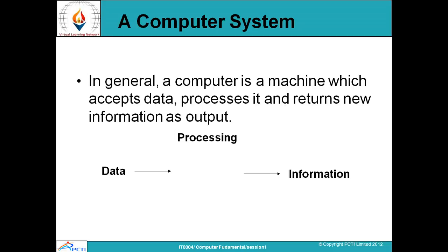A computer system is a machine which accepts data — data is the input we give to the computer so it can perform some work. The computer processes it, performs functions on it, which is called processing, and returns information as output. The calculation or result we require is the output. Processing is done through the central processing unit, and an output is provided to us in the form of information.